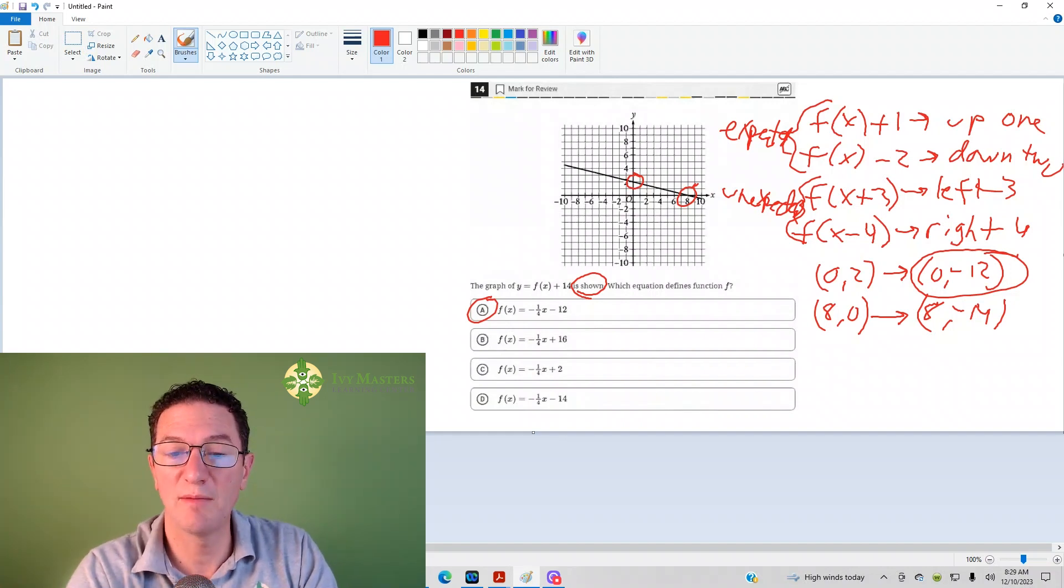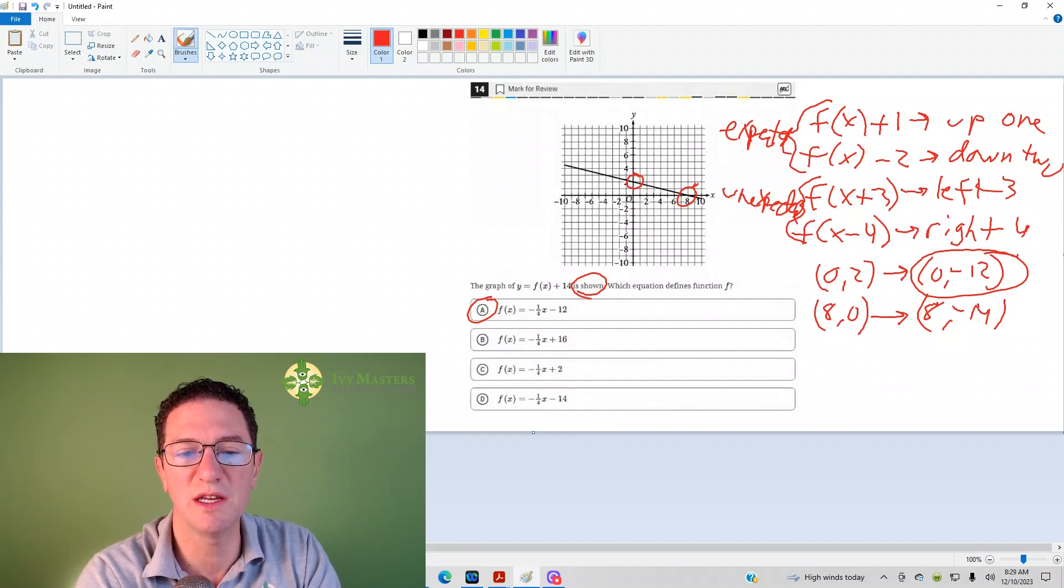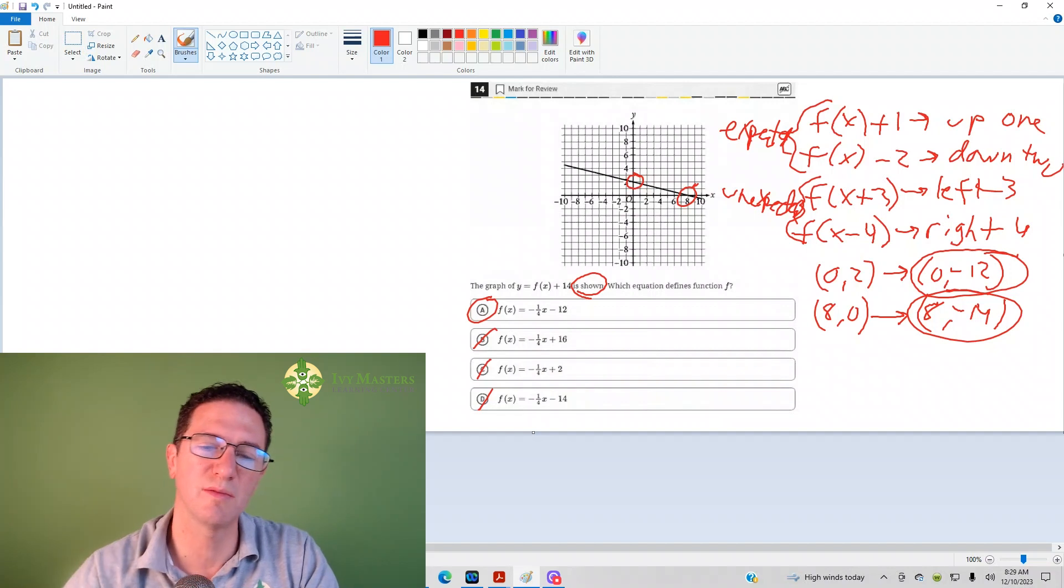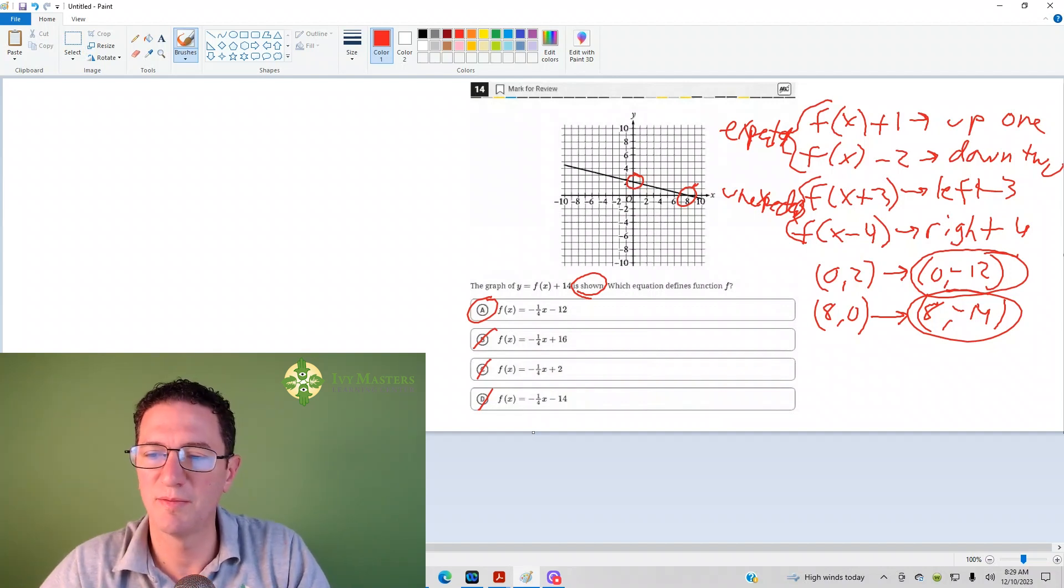If I checked all the answer choices, because you can see here that it's not going to work for B, C, or D. If I had more than one answer choice left, then I'd plug in 8 and eliminate anything that doesn't give you negative 14. If you did it with two coordinates, then you definitely have your answer.